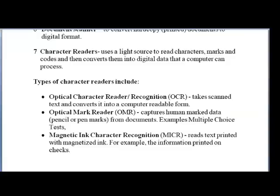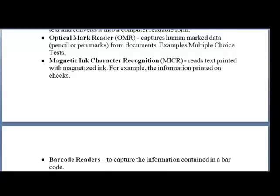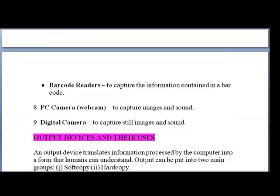Then we have the Magnetic Ink Character Recognition (MICR). It reads text printed with magnetized ink. A very useful thing this machine does is read information from cheques, so it is used heavily by the banking industry — persons will try to counterfeit cheques, so the teller puts the cheque under the MICR with a blue light to scan it and determine if it is authentic. Then we have the barcode reader, used to capture the information contained in a barcode. Most things you purchase will have a barcode, and when you go to the cashier they will scan it.